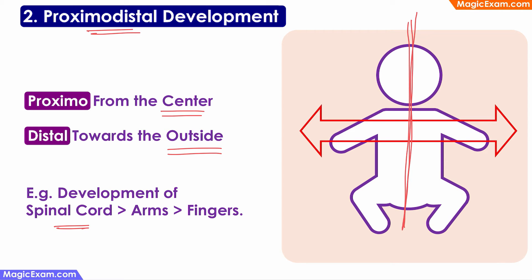After the spinal cord is developed and after the arms are developed, the baby will learn to control his or her arms. The baby can move his or her arms, and only later can the baby move his or her fingers. So development starts from the middle and goes towards the outer parts of the body. And this is proximo-distal development.